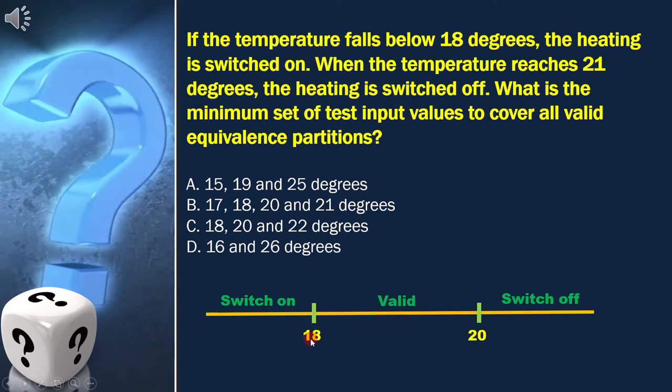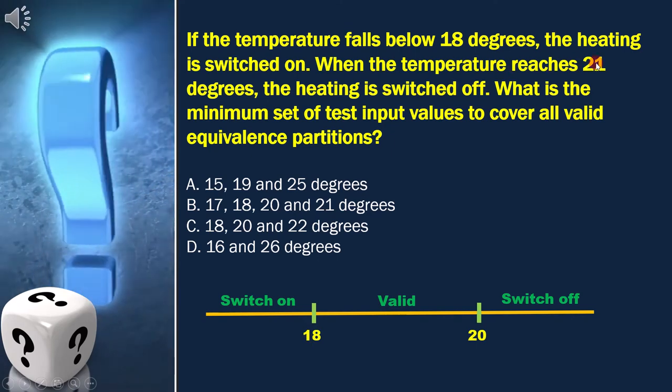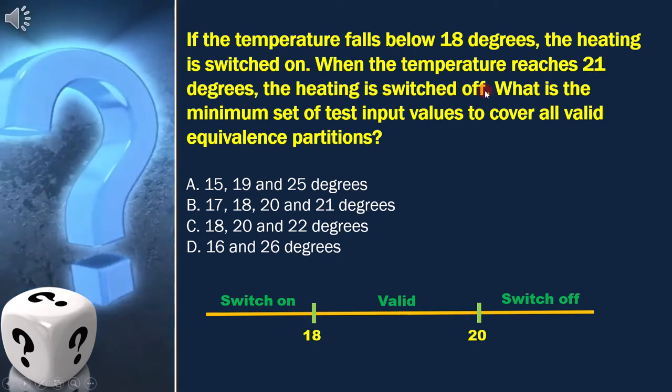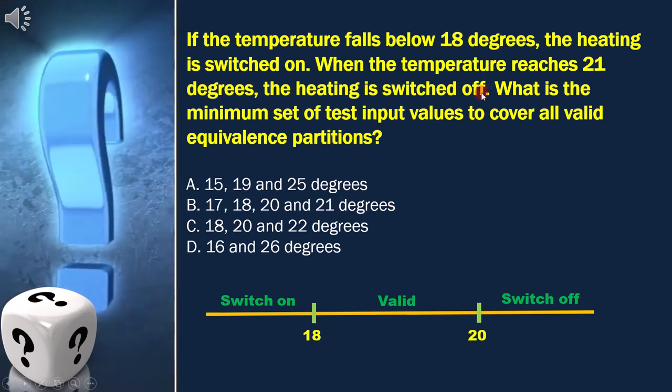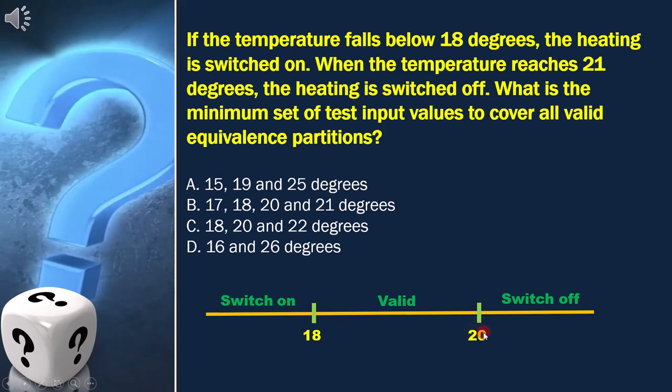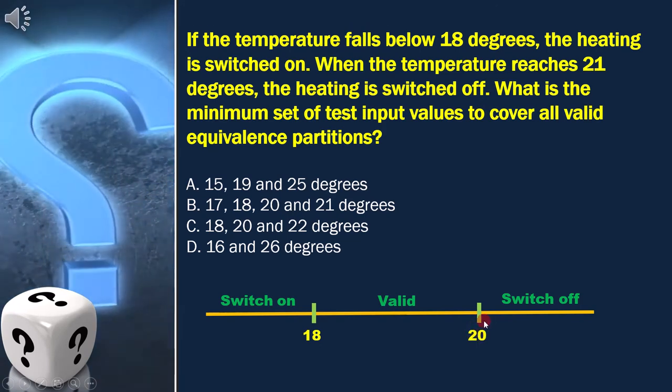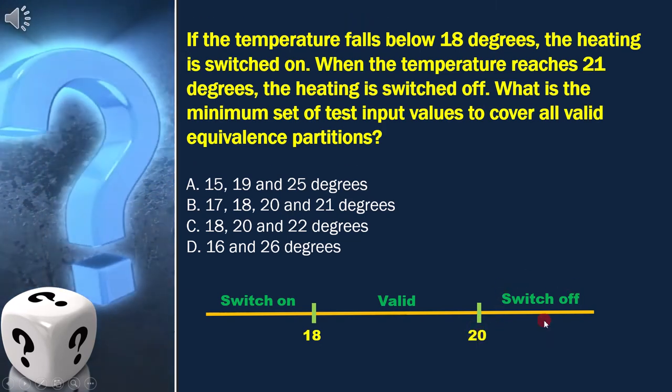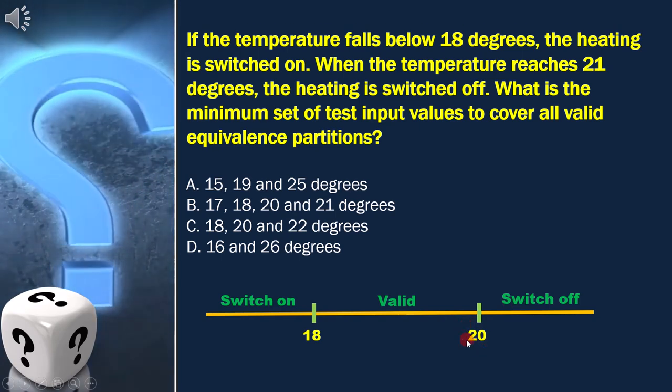As per the question, when the temperature reaches 21 degrees, the heating is switched off. Here, what we need to notice is till 20 the heating is not switched off. At 21, heating is switched off. That means the upper boundary is 20.